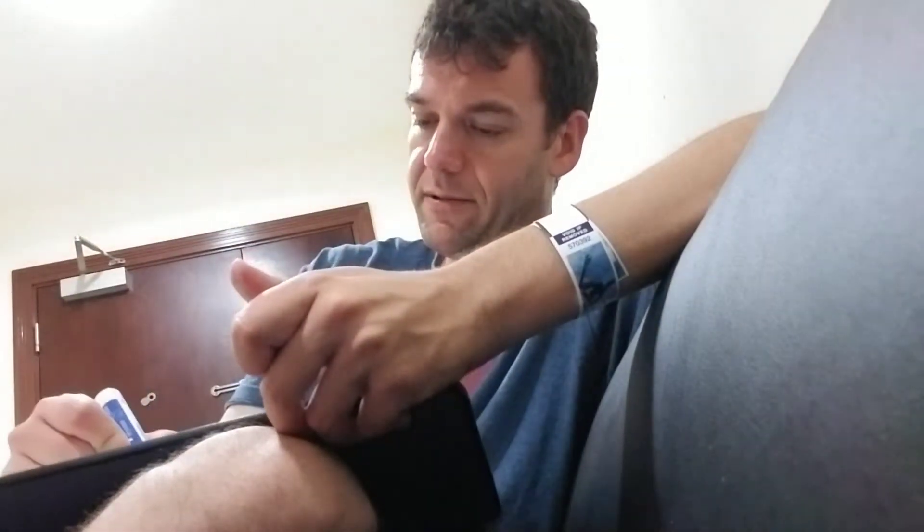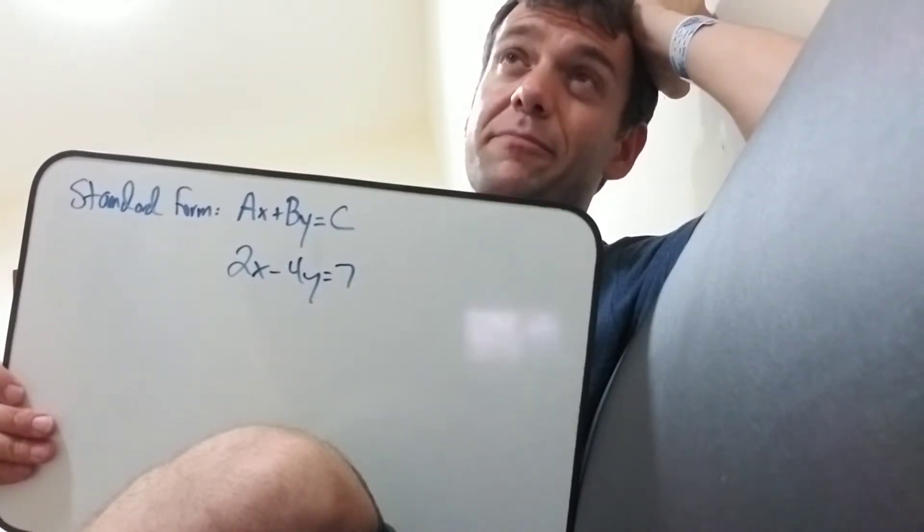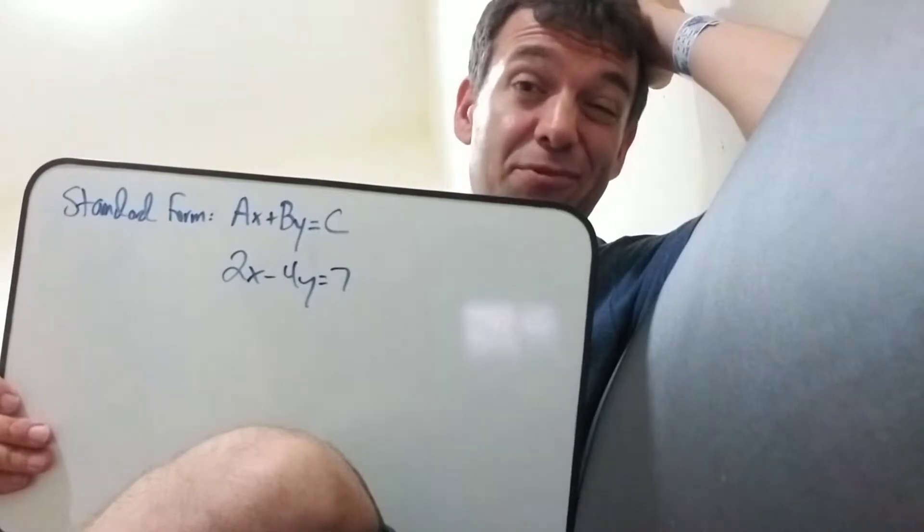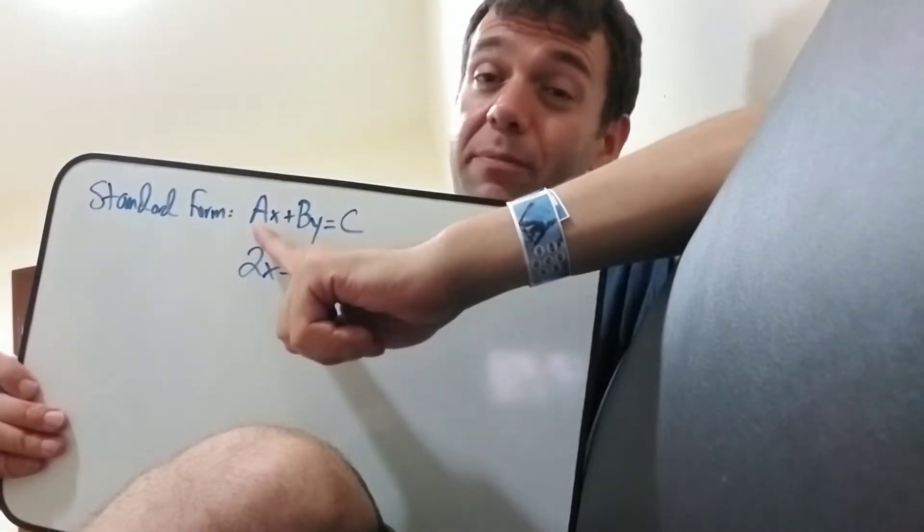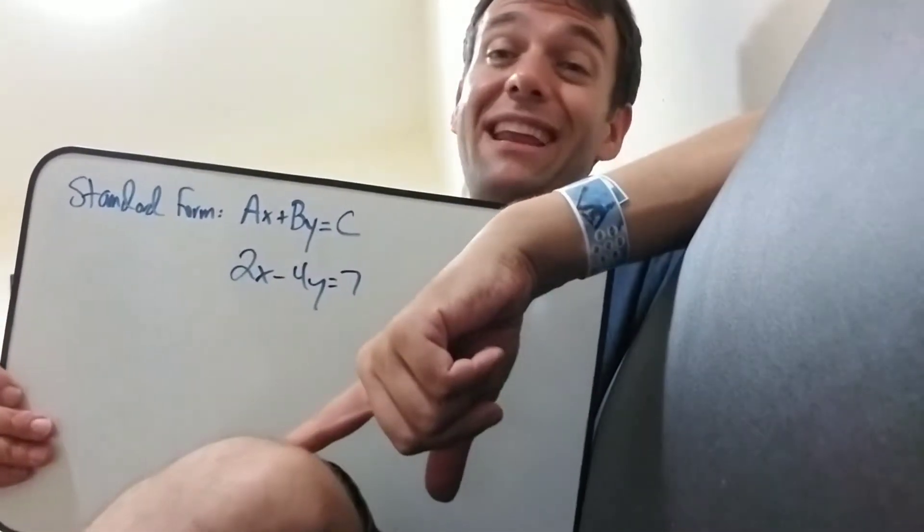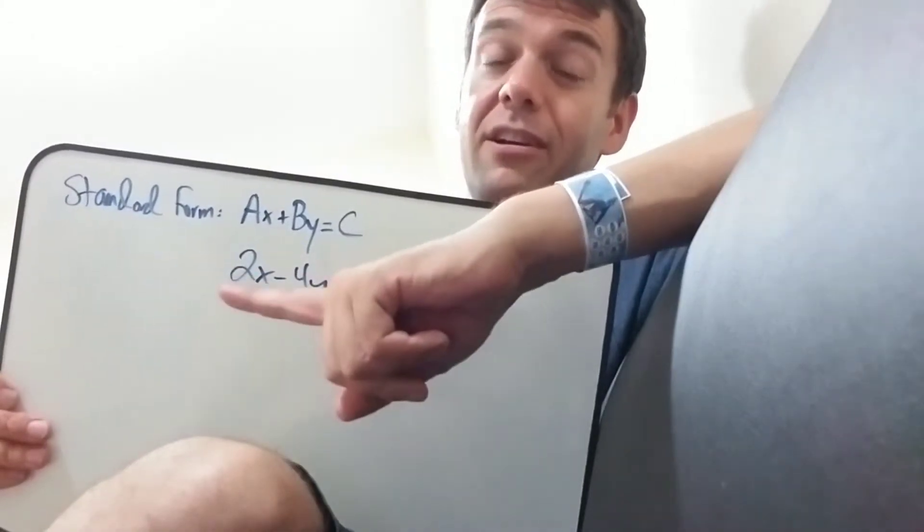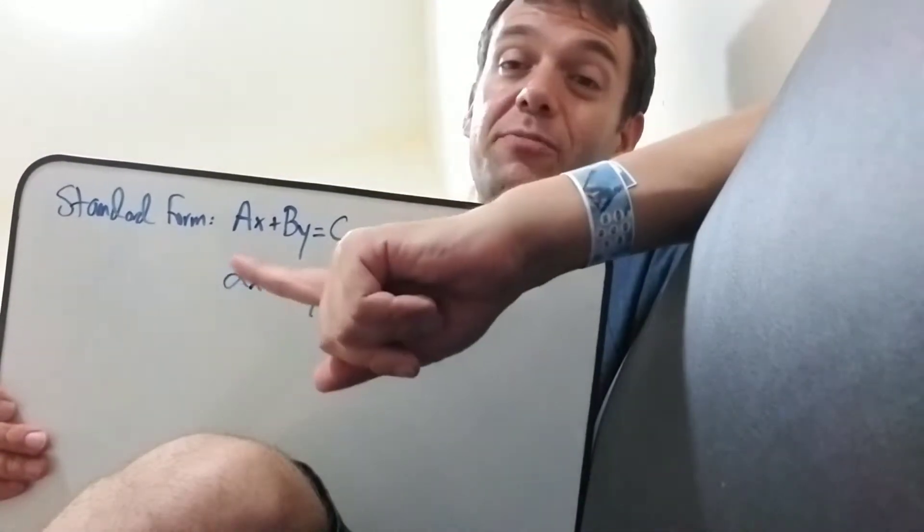Some examples would be this. A, B, and C are just coefficients, they could be decimals or negatives or whatever. But the rule for standard form is the lead guy, the x guy, has to be positive. And if it's not, you've got to multiply everything by negative one, or divide everything by negative one. The second thing is you're not allowed to have any decimals or any fractions anywhere. So if you do, you've got to clear fractions. Like if you have one-half x minus four, you've got to multiply everything by two so that the fraction goes away. That's standard form of a line.